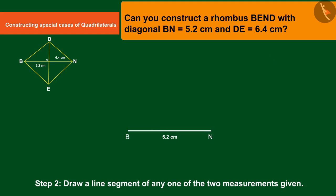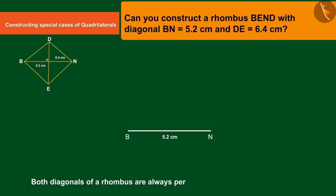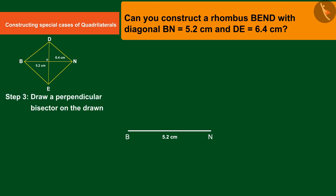Since we know by the properties of rhombus that both diagonals of a rhombus are always perpendicular bisectors of each other, so now we will consider BN as base and make a perpendicular bisector on it.